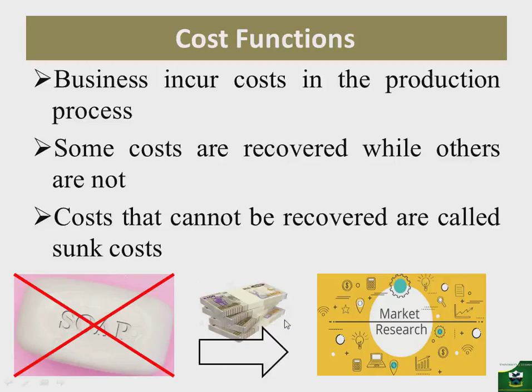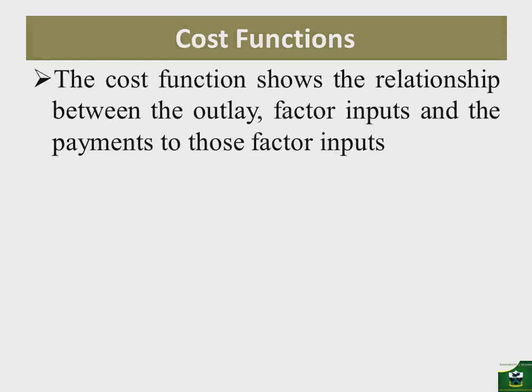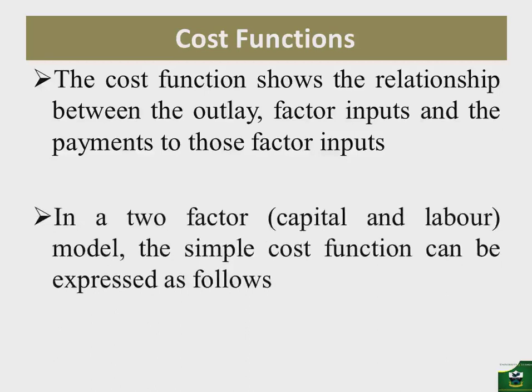The cost function shows the relationship between the outlay, the factor inputs, and the payments to those factor inputs. In a two-factor model with only capital and labor, the cost function gives us the relationship between the total outlay — which is the cost — and the payments going to capital and to labor. R is the rent or cost for buying a unit of capital, and W is the cost for buying a unit of labor. With total labor and total capital, you end up with the total cost for those inputs.